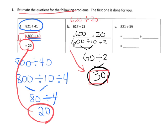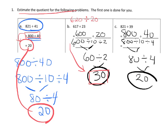Let's do problem C. 821 divided by 39. I think what I'm going to do is round this down to 800 and round 39 up to 40. So we're going to do 800 divided by 10 and divided by 4. So 800 divided by 10 gives us 80, and then 80 divided by 4 gives us 20. And there's my estimation.